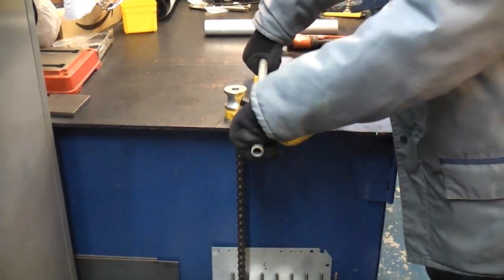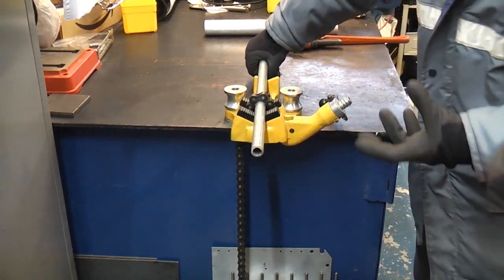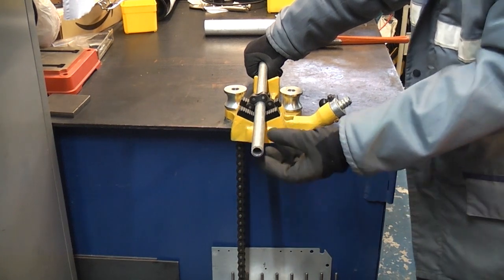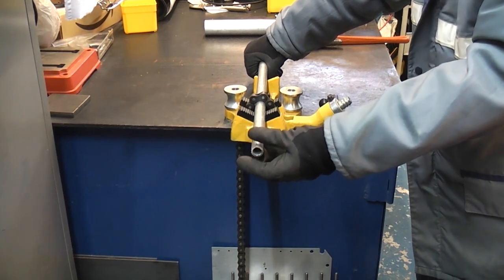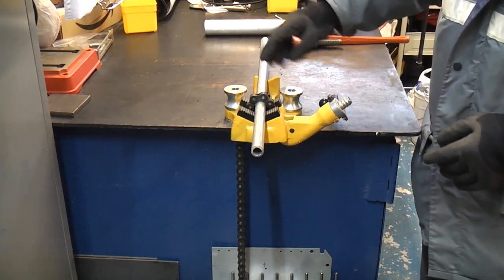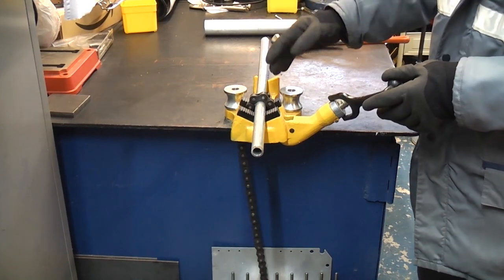Once you tighten the pipe up in there, it is almost impossible to turn it. That means you can quite easily thread the end of it or screw your fittings on, no problem at all. You can be guaranteed it's not going to distort the pipe and it's going to grip it really well. That's why we use a chain vise.